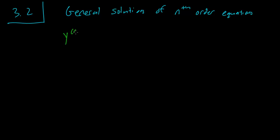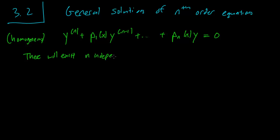Remember that our equation is going to be of this form. Let's consider the homogeneous equation first. This is homogeneous, so this is equal to 0. It turns out there will exist n independent solutions to this.